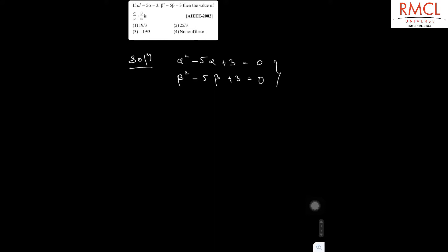If you can see that in both equations, we can say that x squared minus 5x plus 3 equation has two roots which are alpha and beta. So from this quadratic equation, alpha plus beta is 5 and alpha beta is 3.